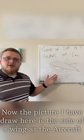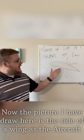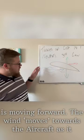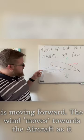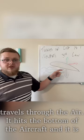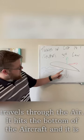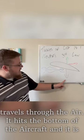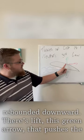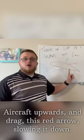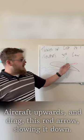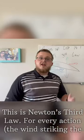The picture I've drawn here is the side of a wing as the aircraft is moving forward. The wind moves towards the aircraft as it travels through the air. It hits the bottom of the aircraft and it is rebounded downward. There's lift — this green arrow that pushes the aircraft upwards — and drag, this red arrow slowing it down.